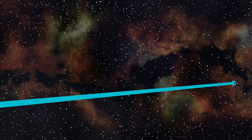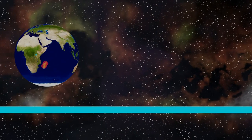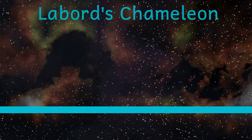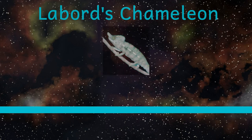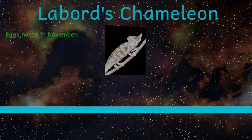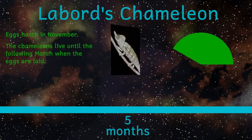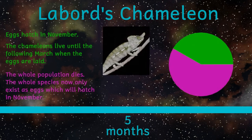Next we have the shortest living reptile, and indeed the shortest living animal with four legs. Found only in Madagascar, we have Laborde's chameleon. This animal spends seven months in its egg, and once hatched, only lives for a further five months. During the dry season, the entire species exists only as eggs, waiting for the right time to hatch and produce the next generation of this curious little fellow.